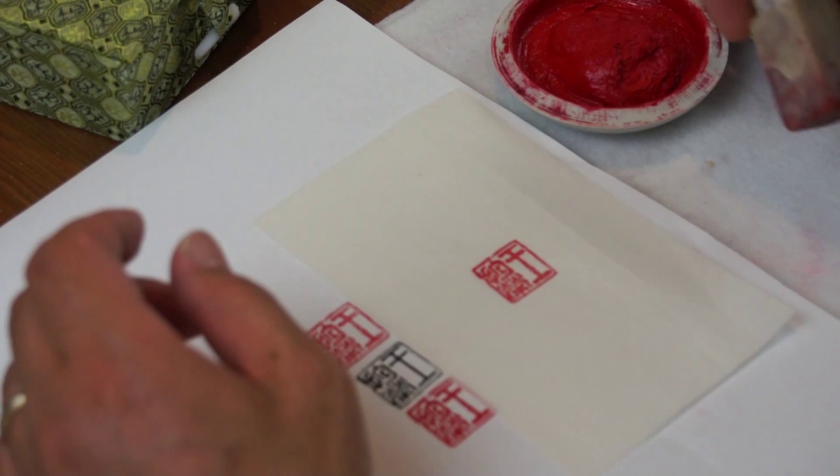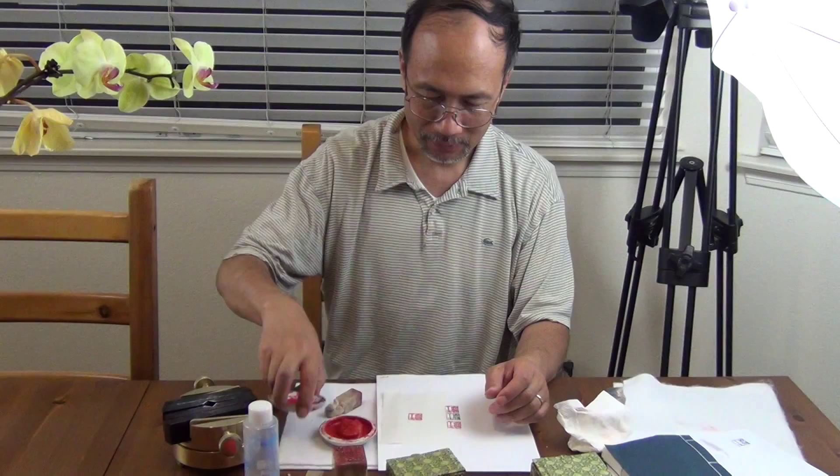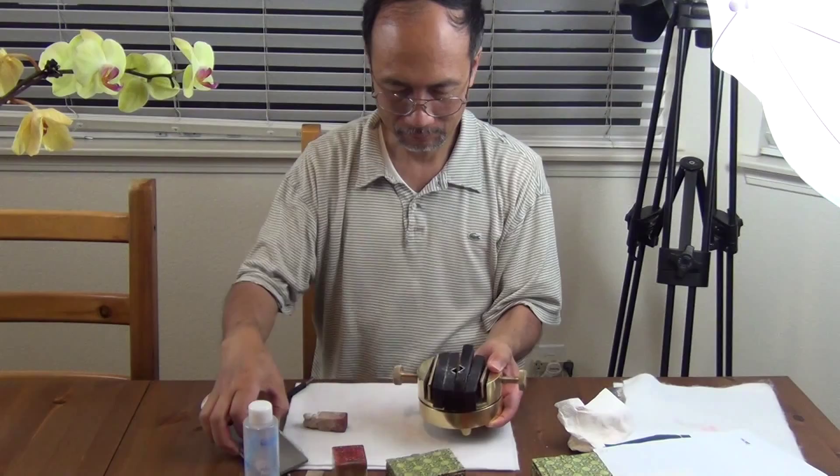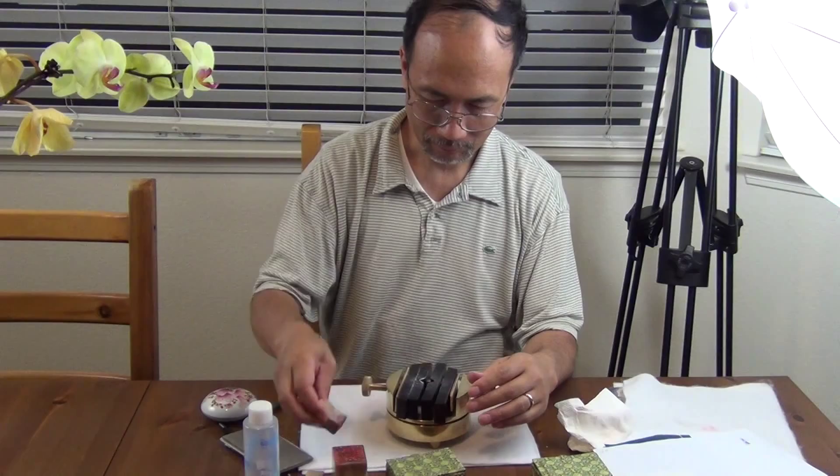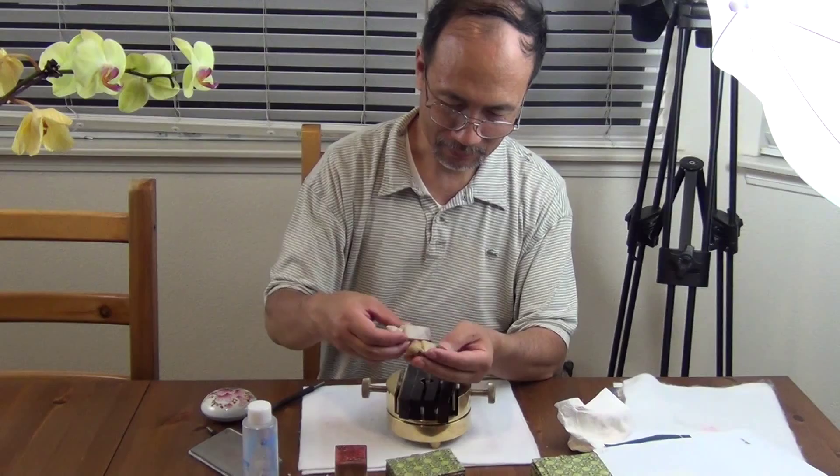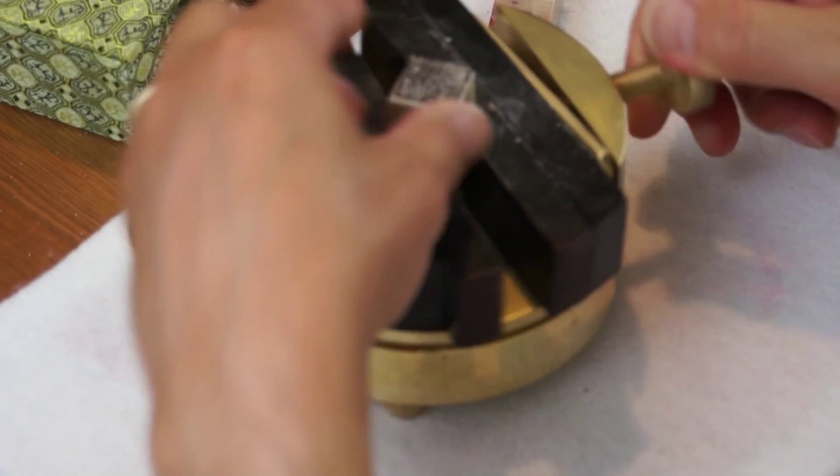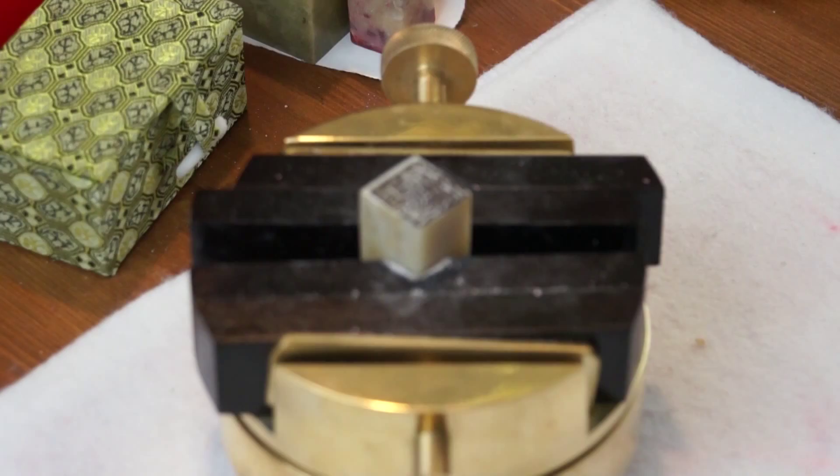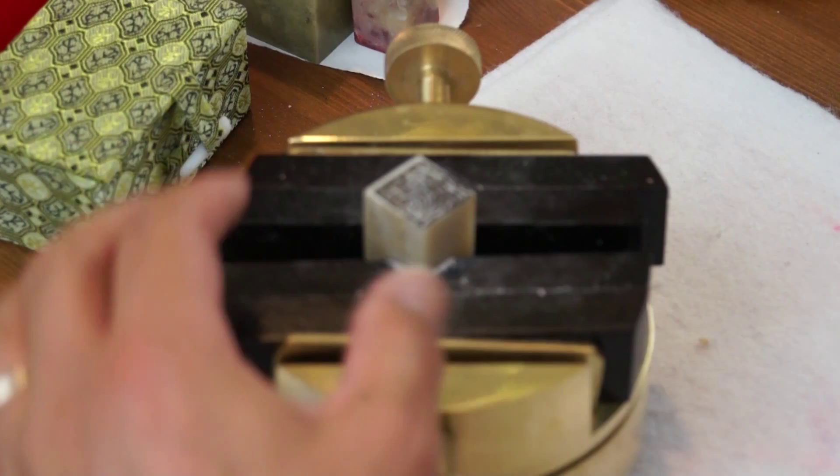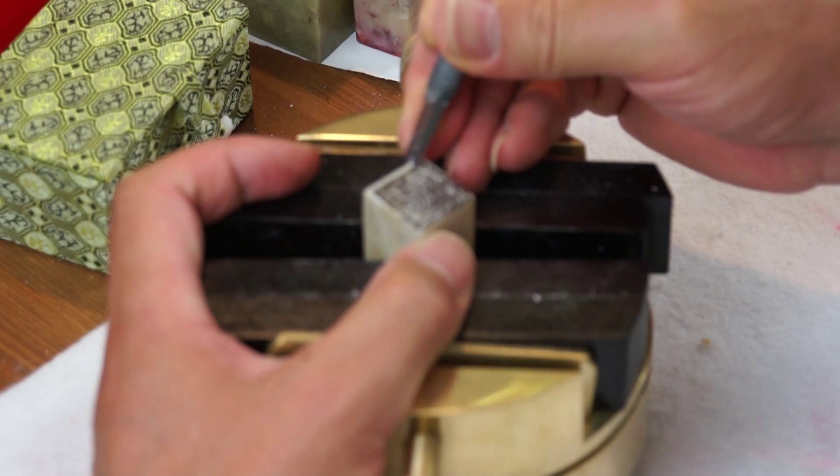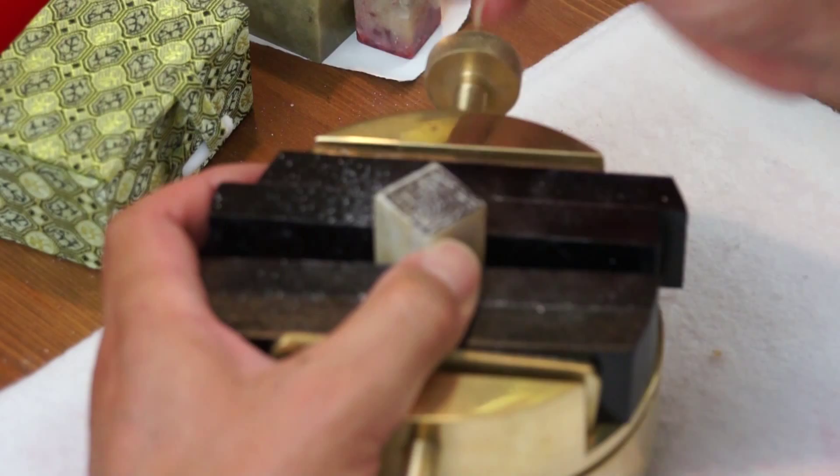Next I'm going to carve Lucy's name seal. This is the same size, a little smaller. Now I'm going to carve this in negative carving or engraving style. Cut the extra margin first. This stone actually feels harder than the first one. This has a different quality, fine stone.